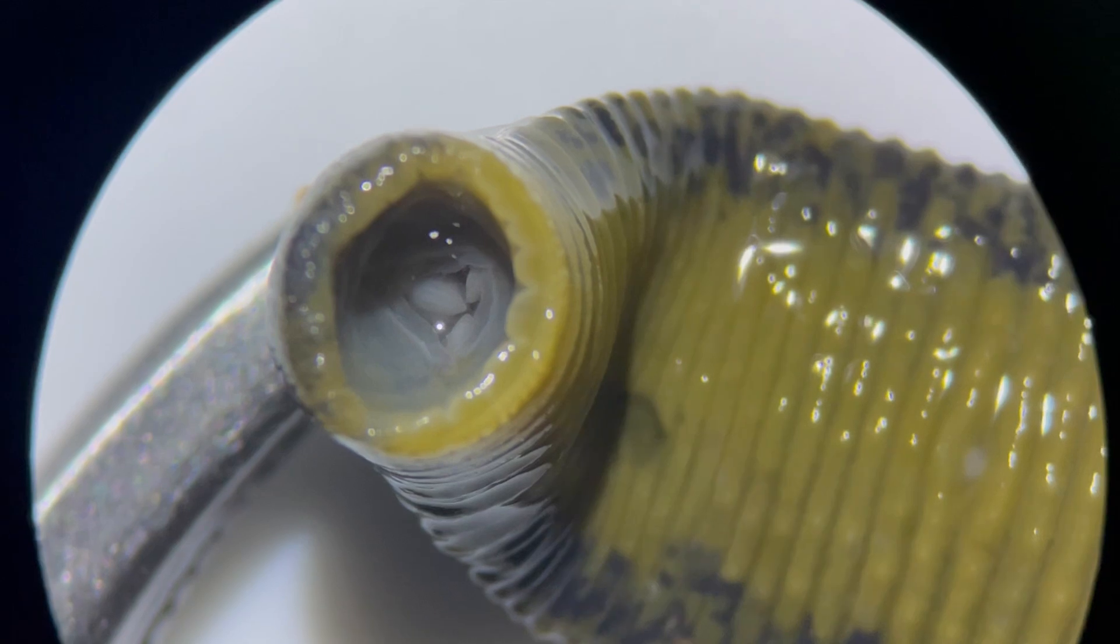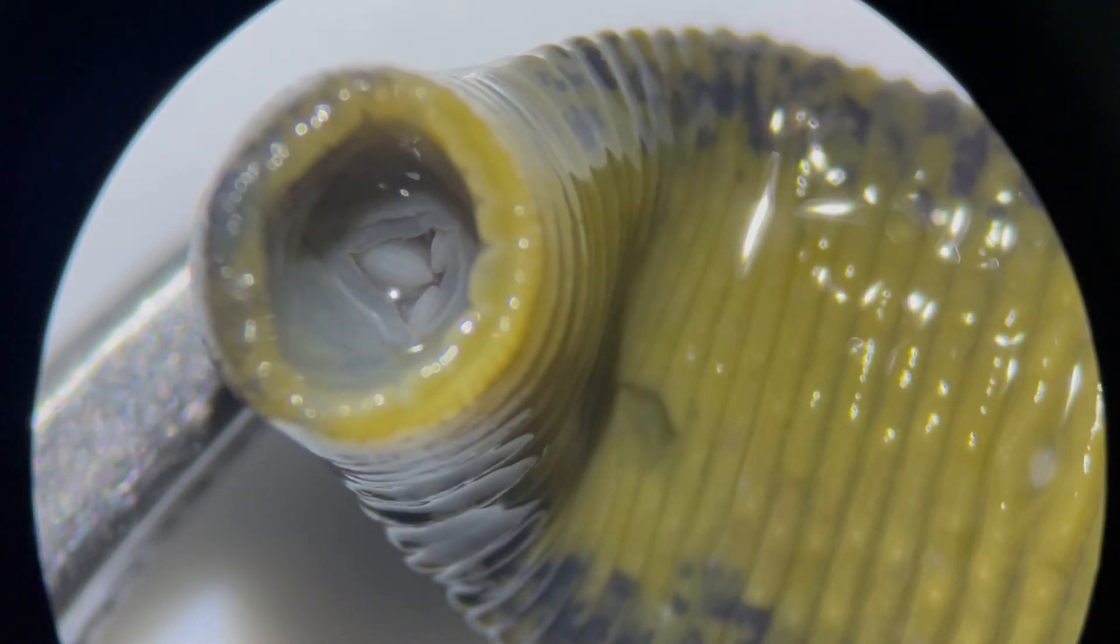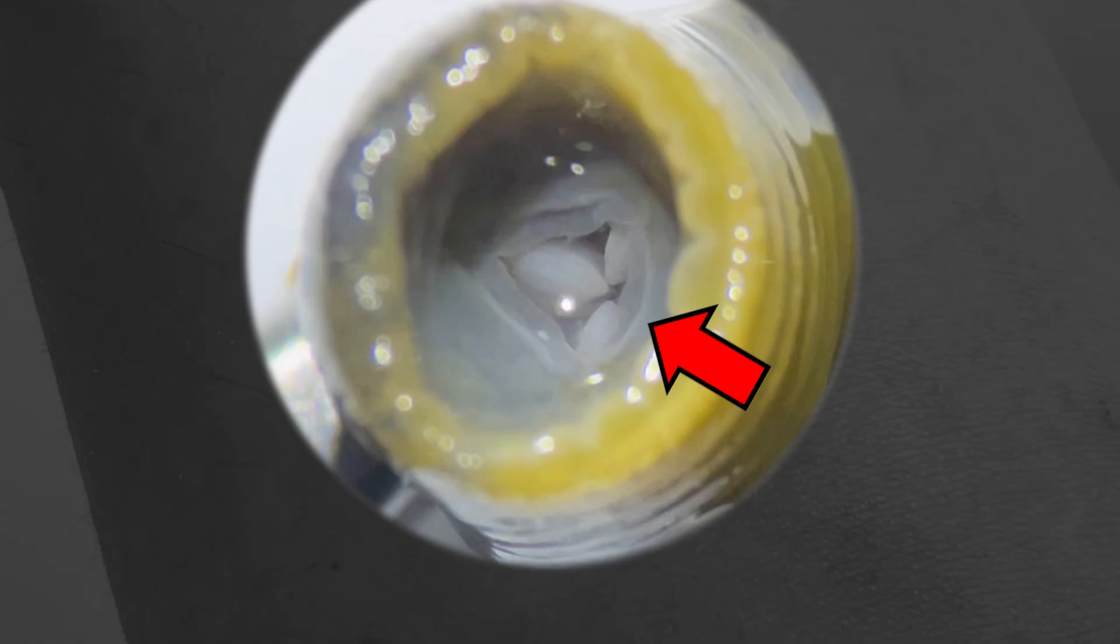When you zoom in on the inside of the mouth, you can observe three jaws. When bitten by a leech, the affected area often shows a Y-shaped mark. This mark is a reflection of the leech's jaw shape.